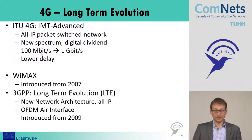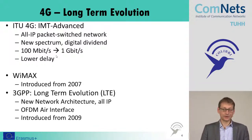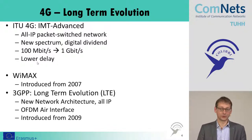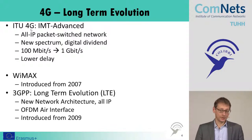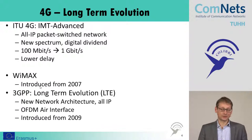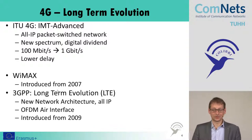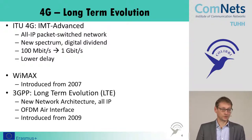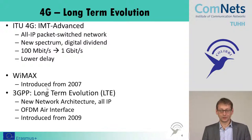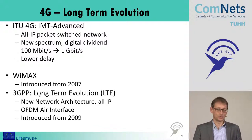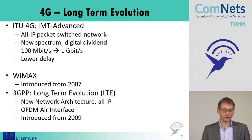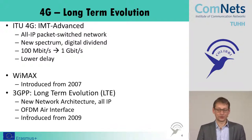We are looking for data rates from 100 megabits to 1 gigabit, and very low delay. Systems satisfying these requirements of the ITU 4G vision are WiMAX, introduced from 2007, and LTE. It seems that the race is in favor of LTE — we have less and less WiMAX networks in the world. For example, in Vilnius there was a city network on WiMAX with high data rate services. But nowadays most networks go to LTE, which is the evolution from UMTS and IMT2000. The new network architecture is all-IP, with an OFDM interface, introduced in service since 2009.